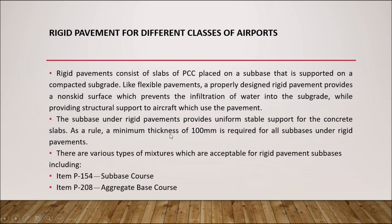The subbase under rigid pavements provides uniform stable support for concrete slabs. As a rule, a minimum thickness of 100 mm is required for all subbases under rigid pavements. There are various types of mixtures which are acceptable for rigid pavement subbases, including item P154 for subbase course.